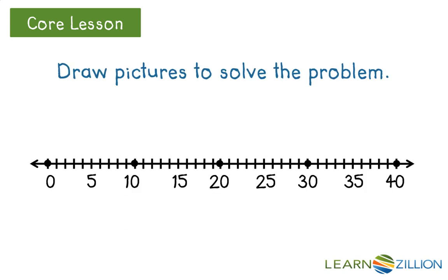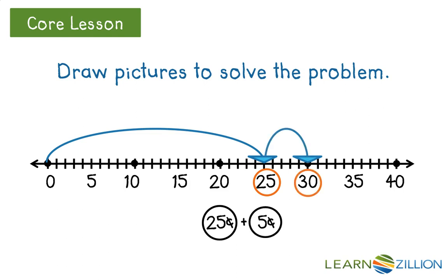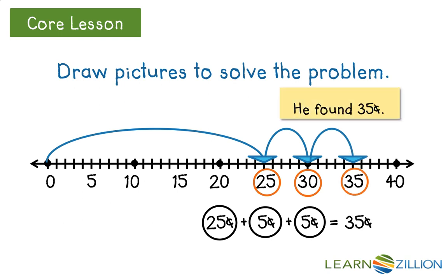Draw pictures to solve the problem. Skip count the largest number, 25, first. There's 25. Now we can skip count by 5 starting at 25. 25 plus 5 more is 30, plus 5 more is 35. He found 35 cents.